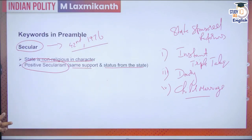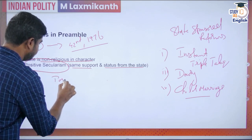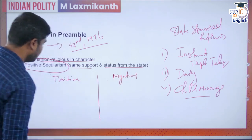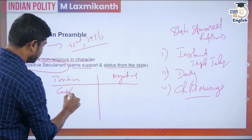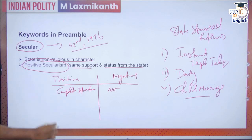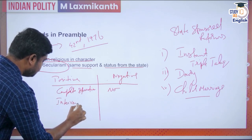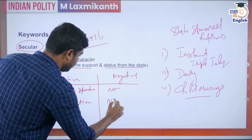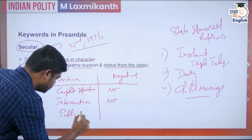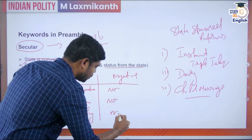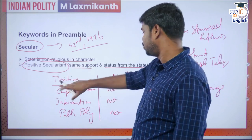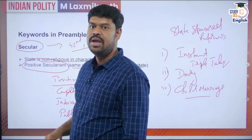To distinguish between positive secularism in India and western negative secularism: in western secularism there is a complete separation between state and religion; in India there is no such complete separation. In India there is an interventionist approach in a positive direction; in western secularism there is no intervention and they are completely separate. Religion can be a basis of public policy in India, but there is no such religion-based public policy in western countries.